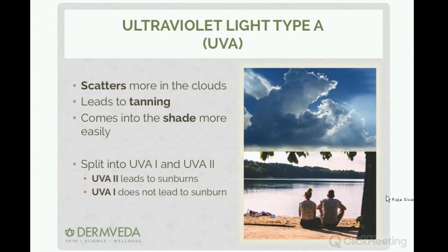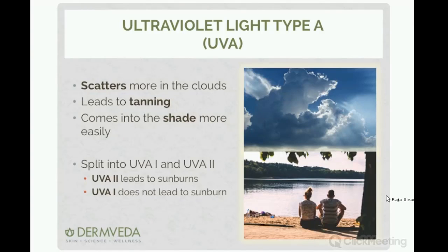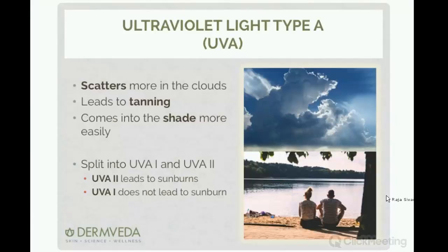UVA scatters more in clouds, is responsible for tanning, and it can get into the shade — ultraviolet light can bounce from surrounding objects or scatter from the atmosphere even into shaded areas. UVA is split into two forms: UVA1 and UVA2. UVA2 is higher energy and can cause more redness and sunburns; UVA1 largely does not. When you think about sunscreens and SPF, you're really looking at how well the sunscreen protects you from redness, which means you're only measuring UVB and UVA2. UVA1 becomes important when thinking about long-term prevention of sun damage.